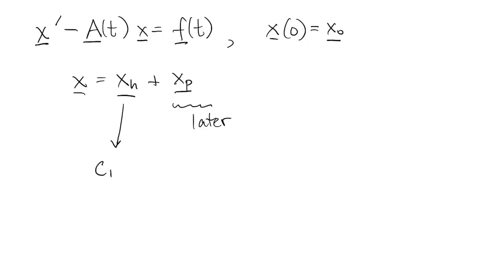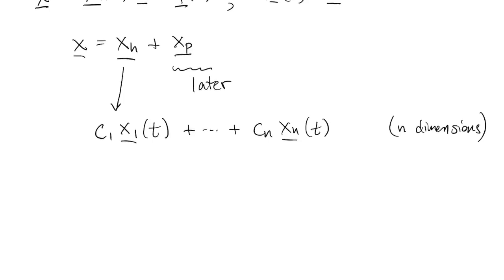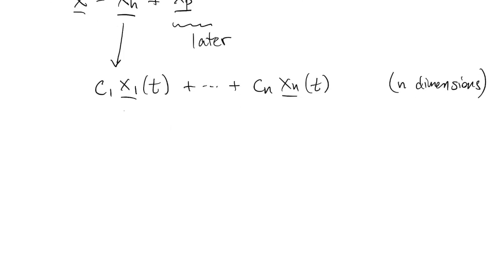The theory again tells us that it's a linear combination of n solutions, x1 to xn. n here is the dimensionality of x. And it's critical that these x1, x2, and so on all be independent solutions of the homogeneous problem.